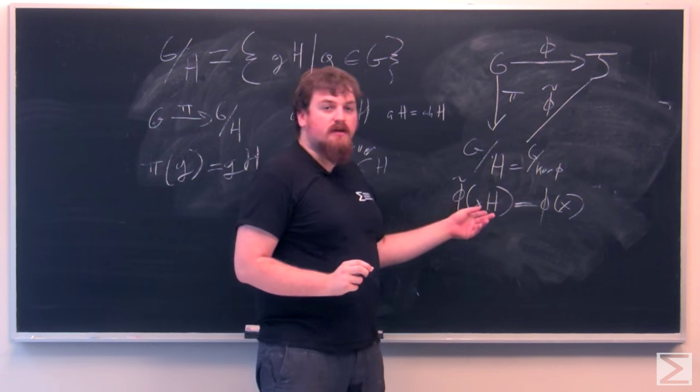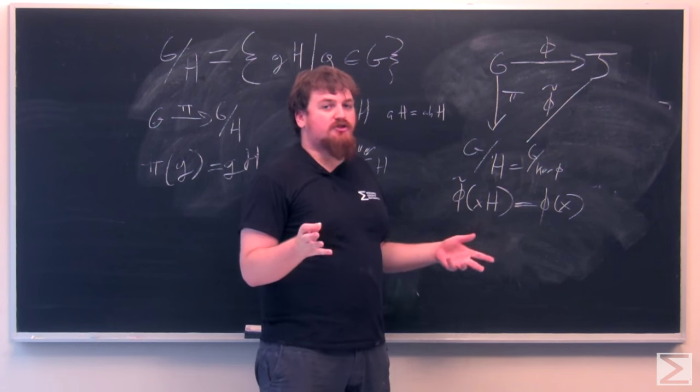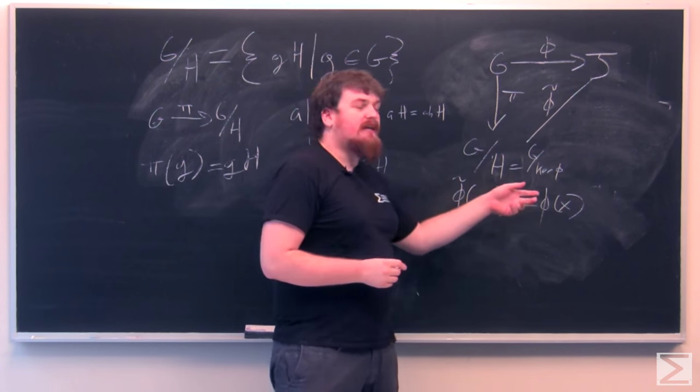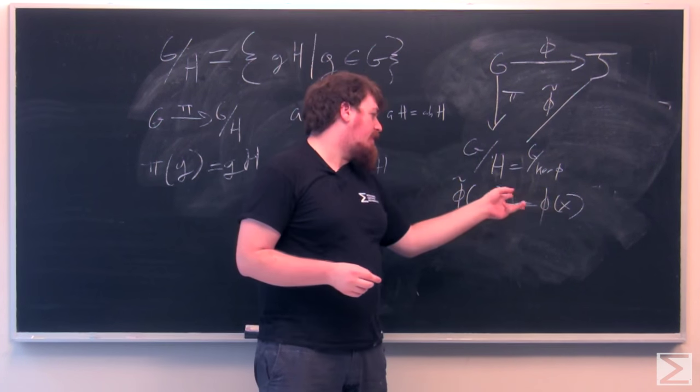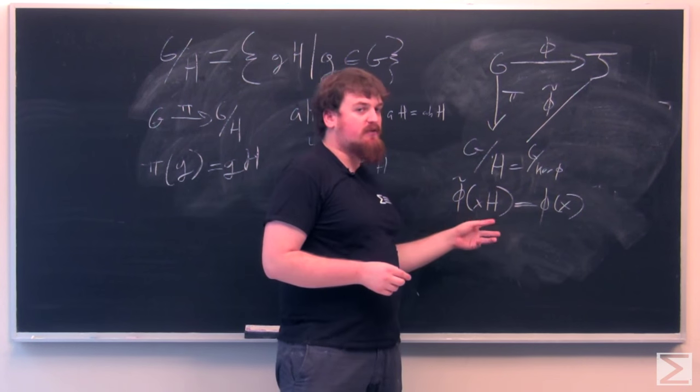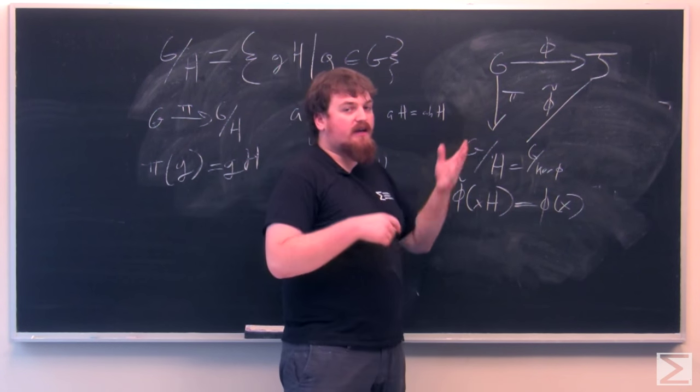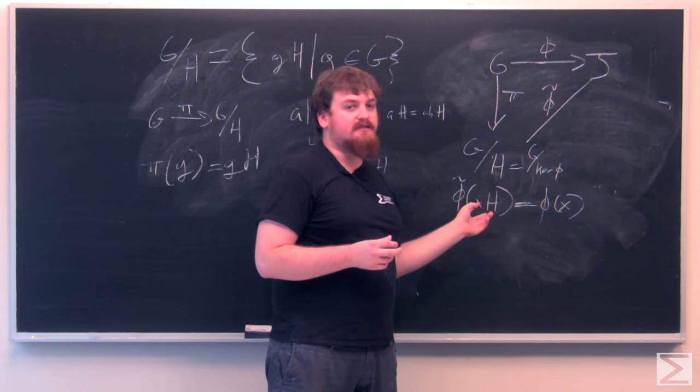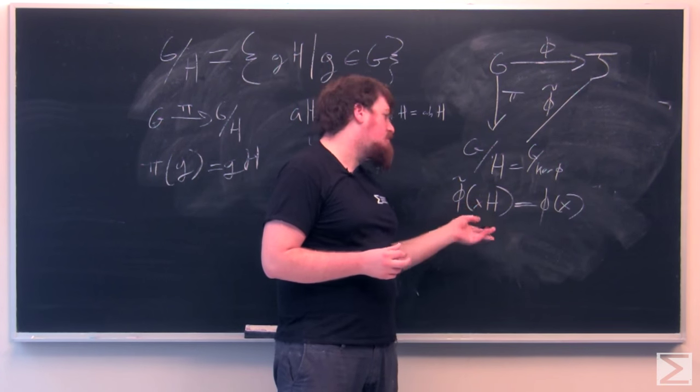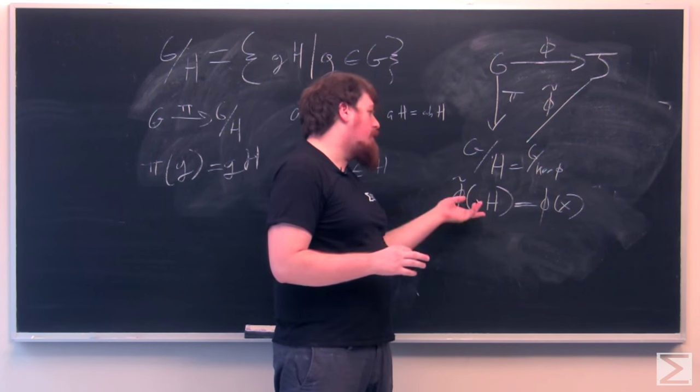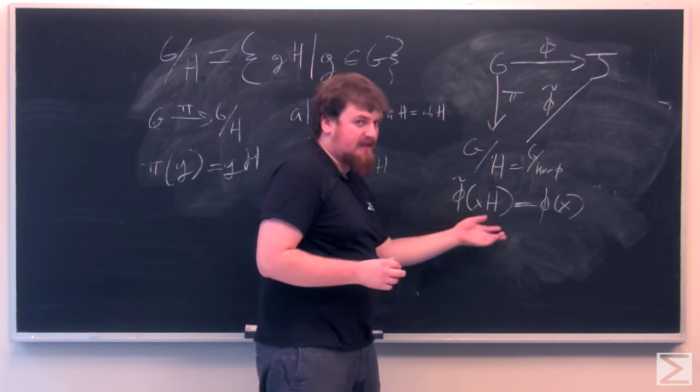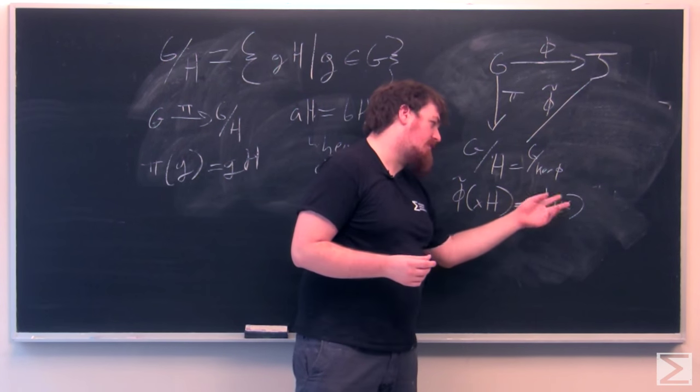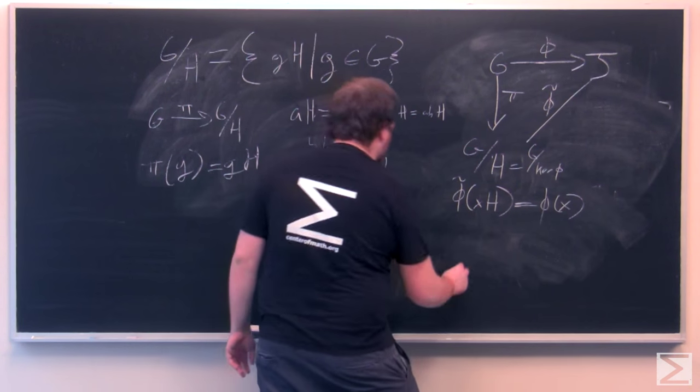Now, because every element in XH is going to be of the form X times some member of H, they're all going to get sent to the same thing. All those elements when considering that as a subset of G are going to get sent to the same element of J by phi. So this thing is well-defined, and it sends everything in XH and thus the member of G mod H, XH itself, to the singleton element of J, which is phi of X symbolically.